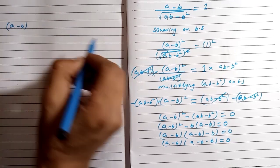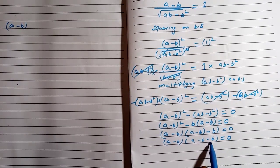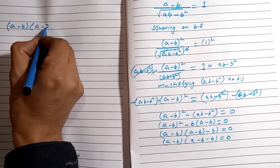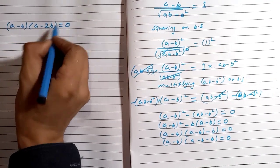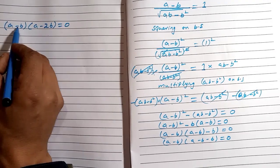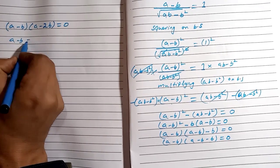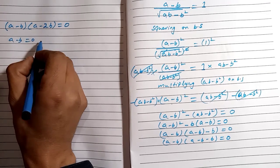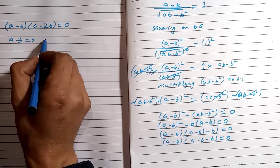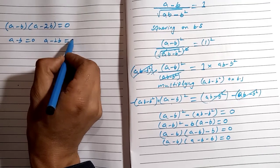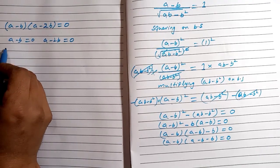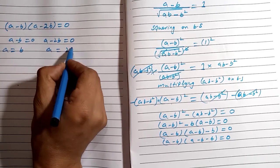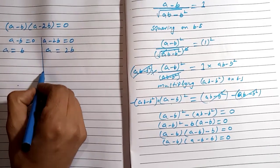So from the two factors we get two equations: a minus b equals zero, giving a equals b; and a minus 2b equals zero, giving a equals 2b.